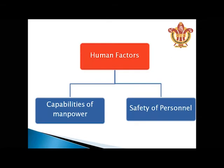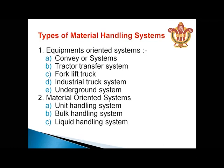Under human factors, we consider the capabilities of manpower and the safety of personnel — how we follow safety rules and regulations, especially in processes which are hazardous. Safety of personnel is very important, and the capabilities of manpower are also a key consideration.